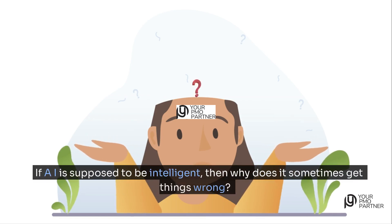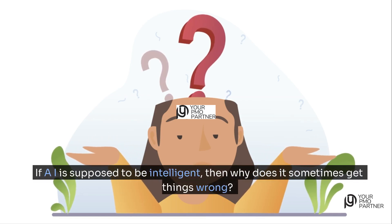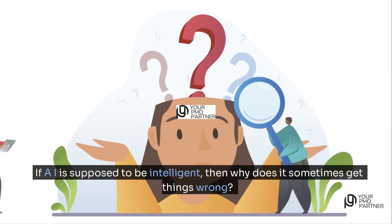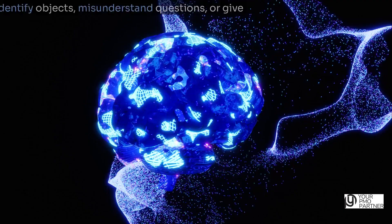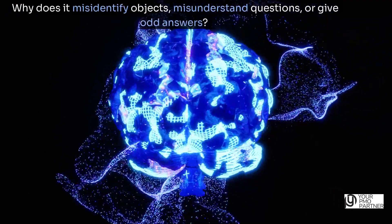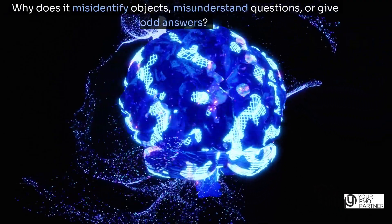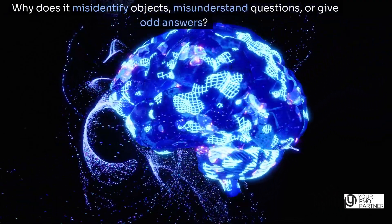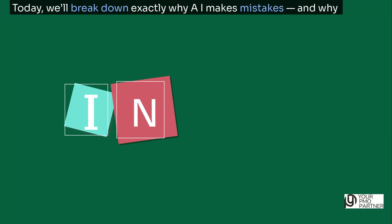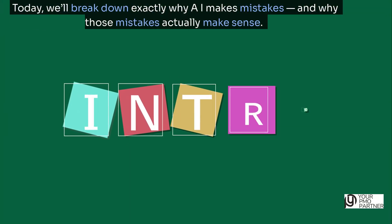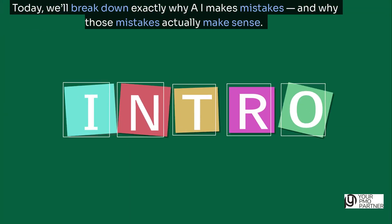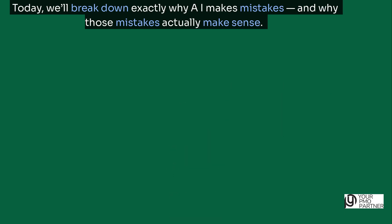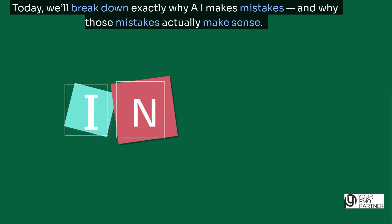If AI is supposed to be intelligent, then why does it sometimes get things wrong? Why does it misidentify objects, misunderstand questions, or give odd answers? Today, we'll break down exactly why AI makes mistakes, and why those mistakes actually make sense.